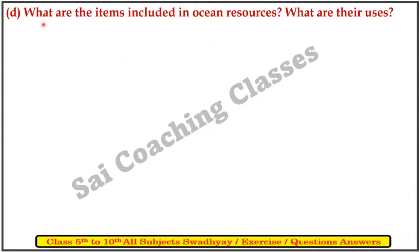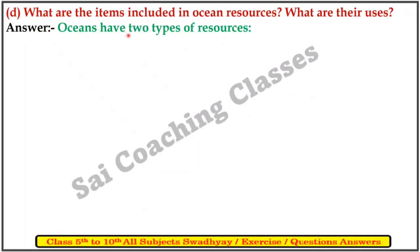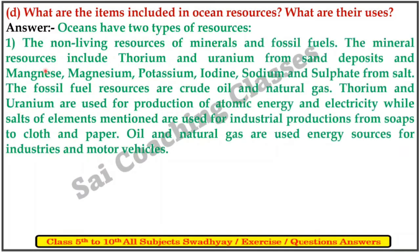D. What are the items included in ocean resources? What are their uses? Answer: The ocean has two types of resources. First, the non-living resources of minerals and fossil fuels. The mineral resources include thorium and uranium from sand deposits and magnesium, potassium, iodine, sodium and sulfate from salt.